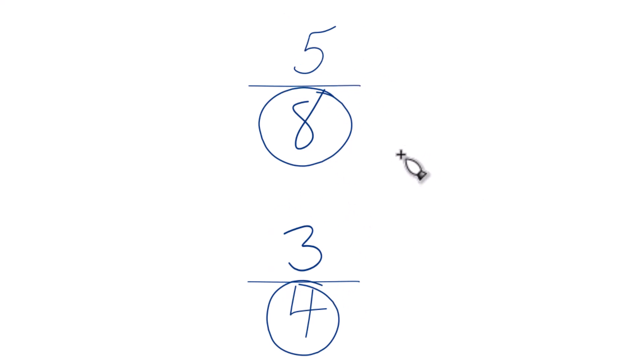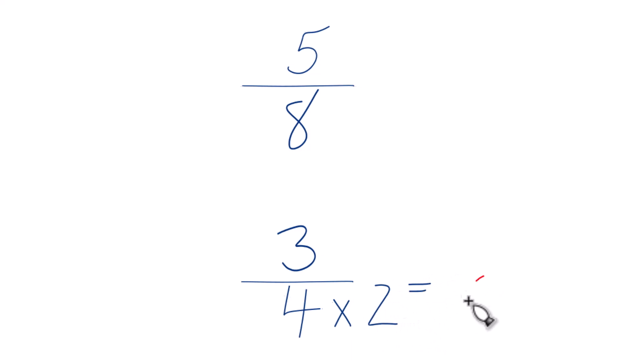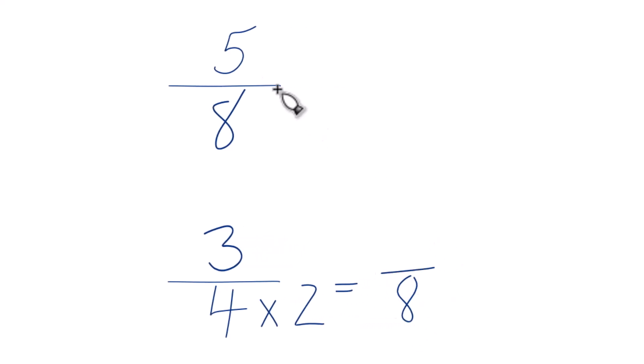So as we look at this here, 4 goes into 8 two times. So I'm just going to multiply 4 times 2, because 4 times 2 equals 8. Up here, we already have 8. So let's just call this 5/8. We won't change anything.